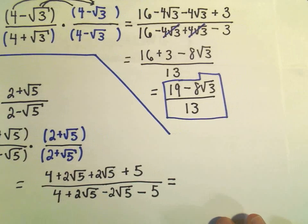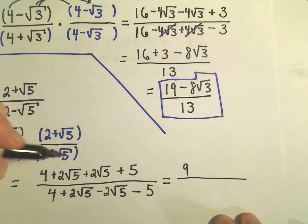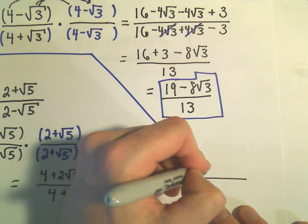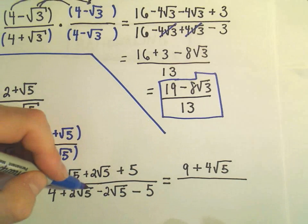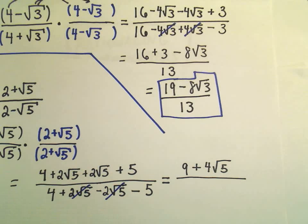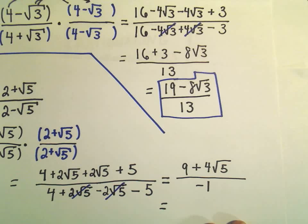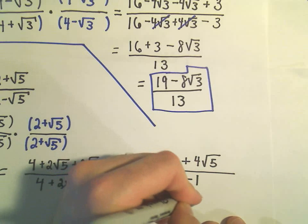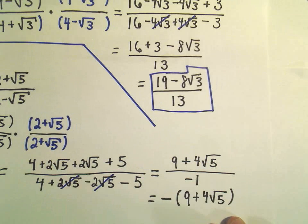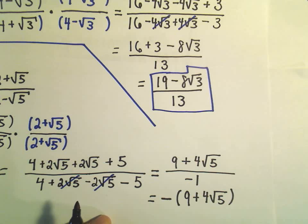So just a little cleanup here. In the numerator, I've got a positive 4 and a positive 5 — that's going to combine to make positive 9. Then I have 2 root 5 plus 2 root 5, that's 4 root 5. And in the denominator, our positive 2 root 5 and our negative 2 root 5 cancel out. And then I'm left with 4 minus 5, which is negative 1. And if we wanted to, since we're dividing by 1, we can pull that negative out front. But if you do that, make sure that you put the numerator in parentheses, because this would turn into a negative 9 and this would turn into a negative 4 root 5 when you distribute the negative. So be careful about that as well.